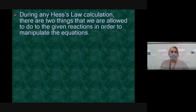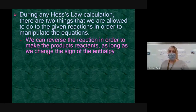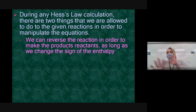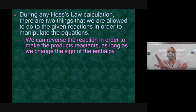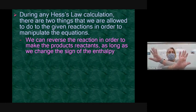Let's look at the rules now. During any Hess's law calculation, there are two things that we're allowed to do to given reactions in order to manipulate the equations. You can reverse the reaction, and that makes the reactants the products, and the products the reactants. If you reverse it, you're just going to flip it, then you have to change the sign of the enthalpy. So if a reaction is exothermic, the opposite or flipped reaction is going to be endothermic, basically.